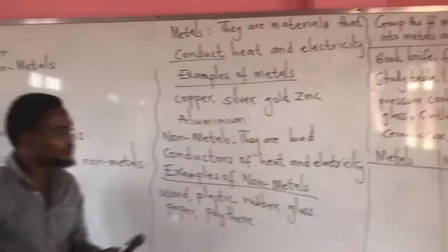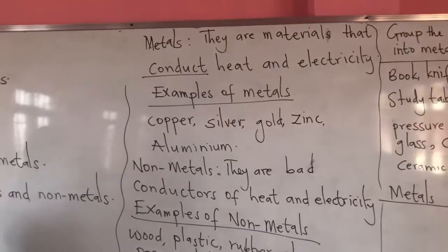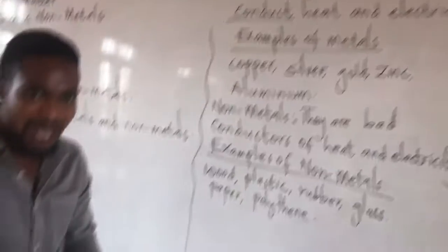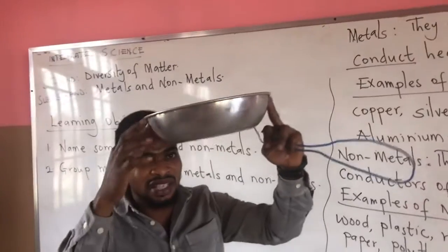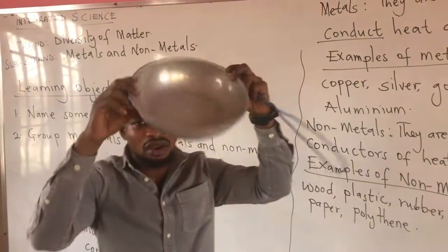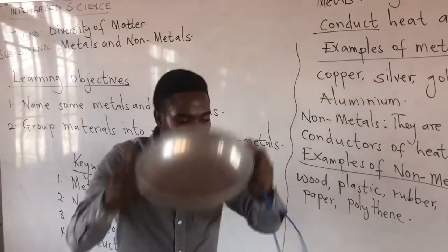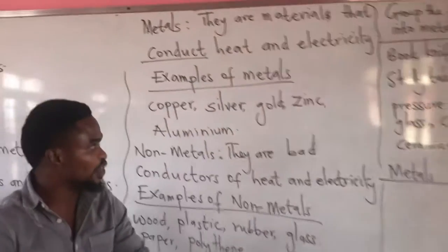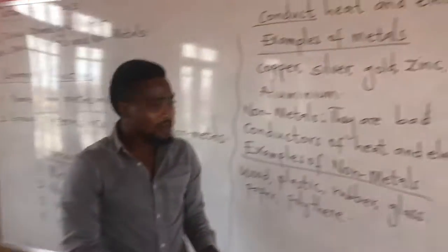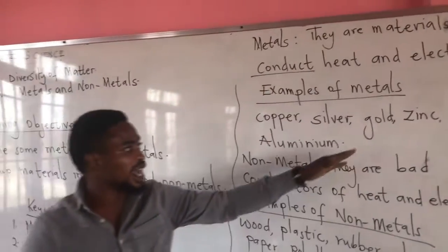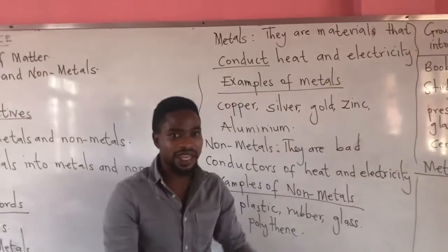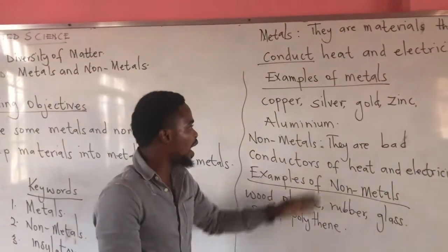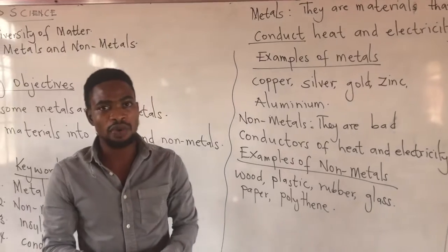Now we want to look at examples of metals. Copper is an example of a metal. We also have silver — looking at this silver bowl, this is an example of a metal. We also have gold, which is used for necklaces, rings, and watches. We also have zinc and aluminum, which are also metals.